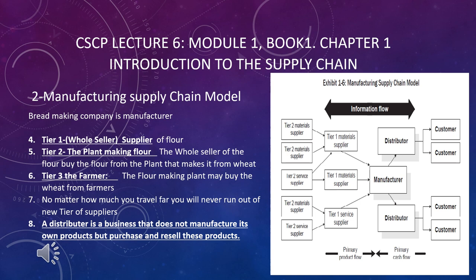Consider the manufacturer as a company that is making bread — making the bread from the flour. So Tier 1 supplier is the supplier of the manufacturer; for example, the wholesaler of the flour is the Tier 1 supplier of the manufacturer. Tier 1 has its own suppliers, which are called Tier 2. For example, Tier 2 is the plant making the flour, and the wholesaler of the flour buys the flour from the plant that makes it from the wheat.